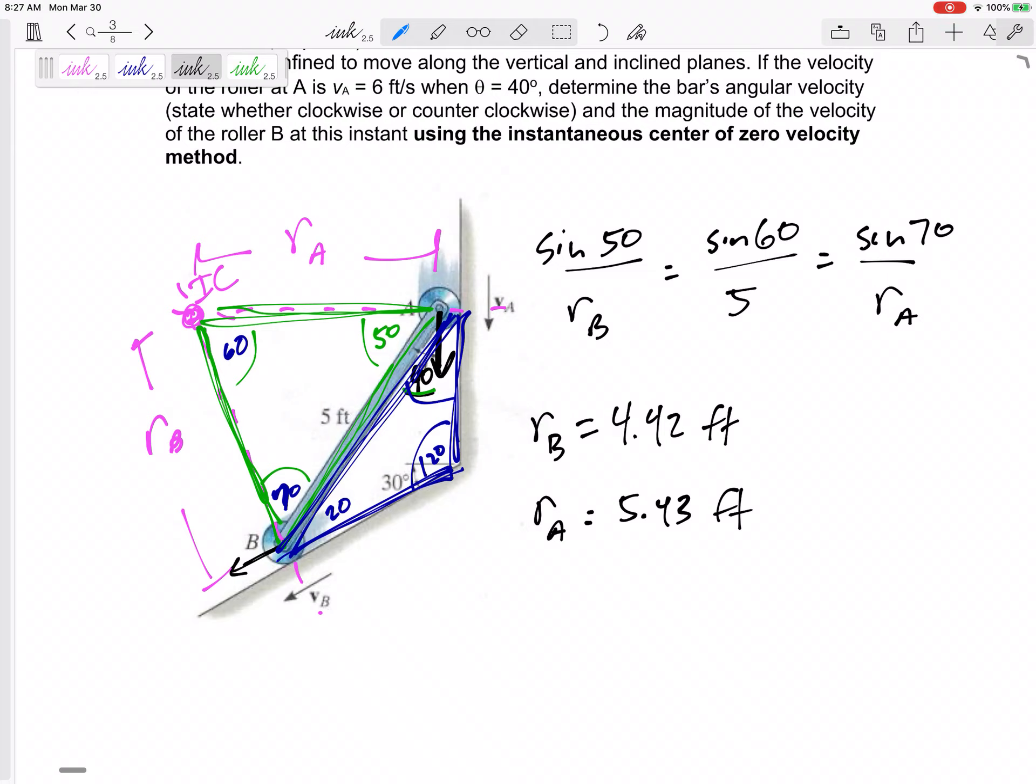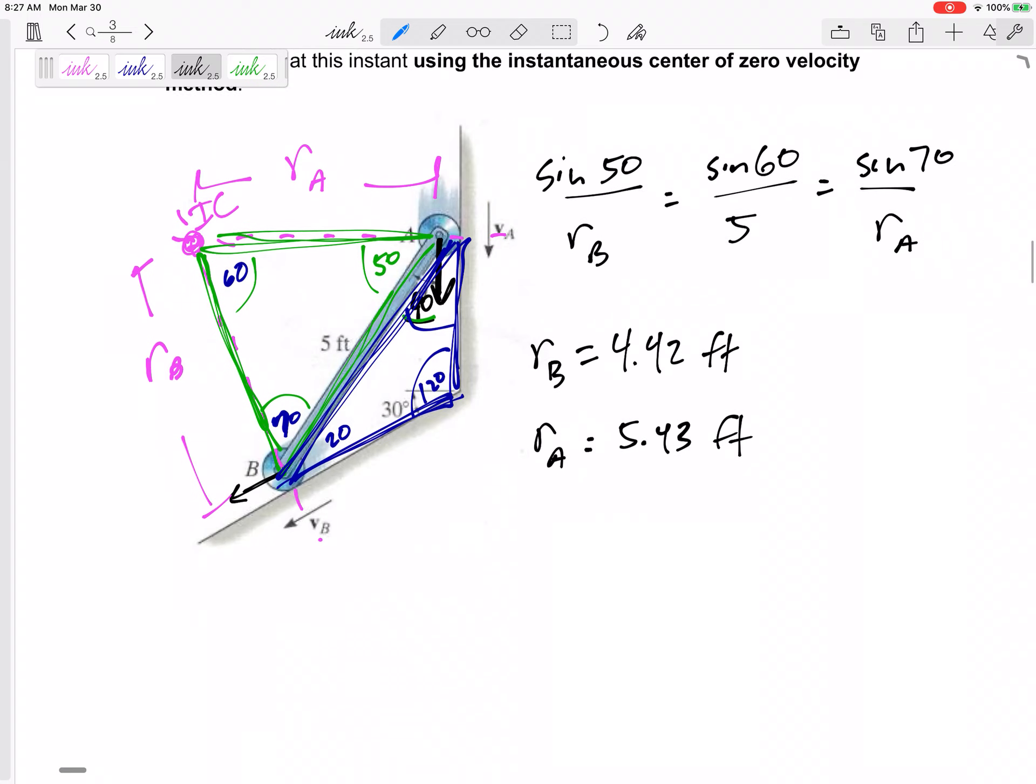Make sure those make sense. Does it make sense that the shortest one is RB? It is opposite the smallest angle, right? Larger angles open up wider. And so, the side opposite a large angle would be a large length. So, check that those make sense.